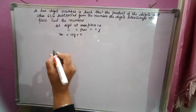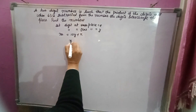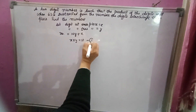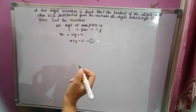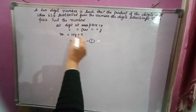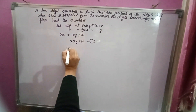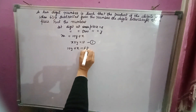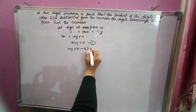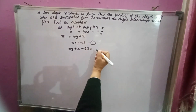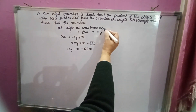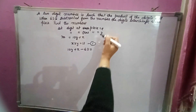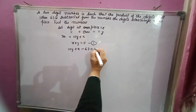The product of digits is 18, so x into y equals 18. This is the first equation. When 63 is subtracted from the number — that is 10y plus x minus 63 — the digits interchange their place, meaning the one's place digit becomes the tens digit and vice versa.